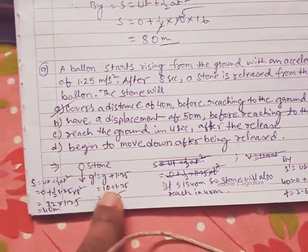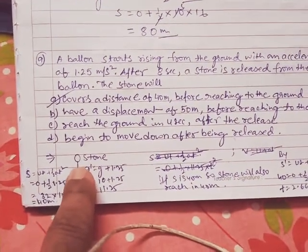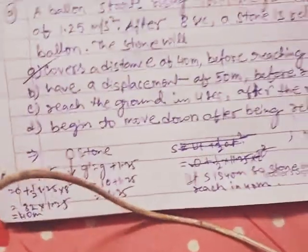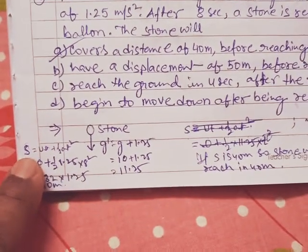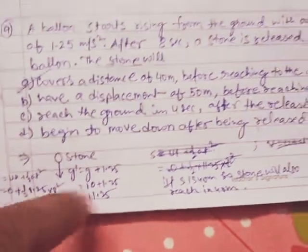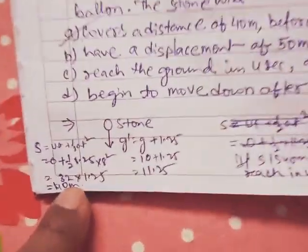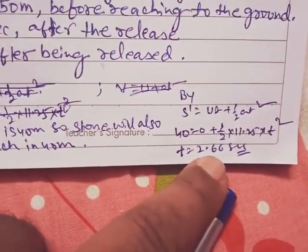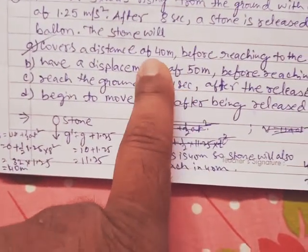In question number 9 bhi bhot easy hai. Ek stone balloon, jab ek balloon upar ki taraf ja raha tha tab stone ko throw kiya gaya hai. Phir se wahi dekho, g ka istemal maine add kar liya, 10 plus 1.25, that means 11.25. Toh kam kar thay s nikal lhe te, I got my s because here I think the time is also given after 8 seconds. So definitely I have used here 8 and I got the answer is 40 meter. So what I have done, so 40 meter mein stone definitely, stone ka abhi 40 meter hi hoga. So 40 meter mein time 2.66 aata hai. So agar my options mein jaun hai 4 second toh match nahi kar rahe hai, so definitely the first option is the best.